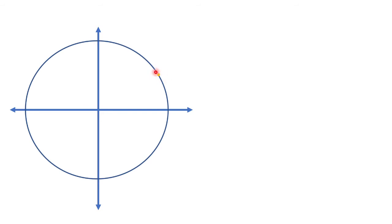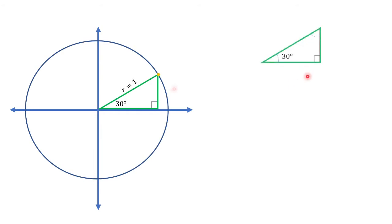Let us first find the coordinates of this point on the unit circle. Let's say this angle is at 30 degrees and we are forming a right triangle. Remember that the radius is equal to 1 because this is a unit circle. With 30 degrees here and 90 degrees here, we can easily say that this angle measures 60 degrees, because the sum of the angles of a triangle should equal 180 degrees. It is also given that the hypotenuse is equal to 1. Therefore, the length of this side is 1/2, because in a 30-60-90 degree triangle, the length of the opposite side of 30 degrees is 1/2 of the length of the hypotenuse.